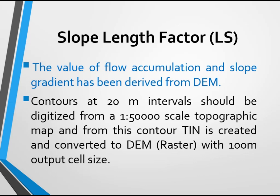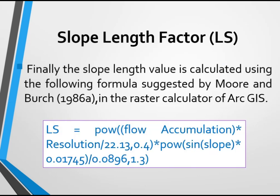Nowadays there are many sources to download a DEM. For instance, you can use the Alaska Satellite Facility or EarthExplorer to download a Digital Elevation Model. After you have prepared the slope map and the flow accumulation map of your watershed, the final step is to determine the LS factor in ArcGIS using the Raster Calculator.